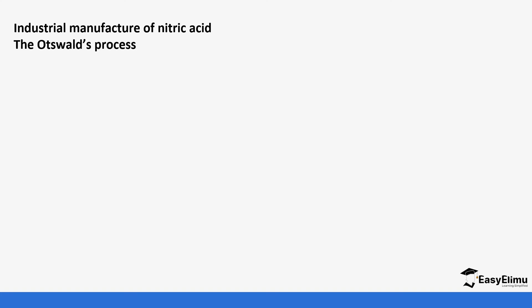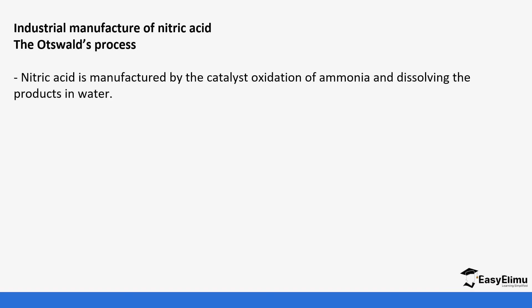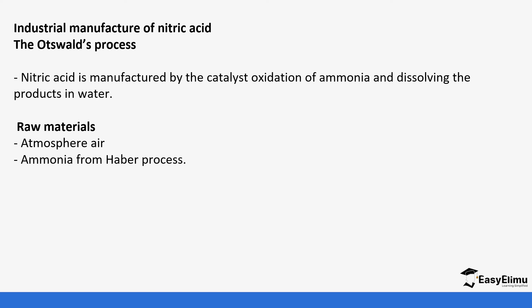Now we look at the industrial manufacture. Nitric acid is industrially prepared by a method called the Ostwald process. It is prepared by the catalytic oxidation of ammonia, and then the products formed are dissolved in water. The raw materials are atmospheric air and ammonia, which comes from the Haber process.